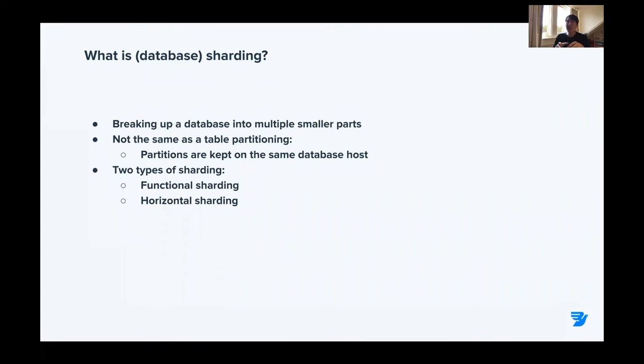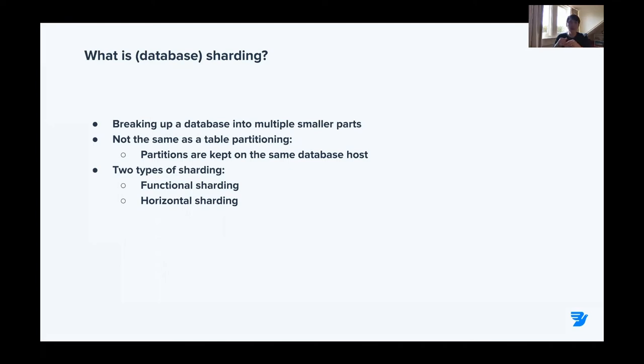Database sharding is basically breaking up your database into smaller parts. The reasons for doing that include: you've reached the limitations of your database — exhausted CPU, data size is too large, or replication is lagging behind. There could be reasons for performing sharding to spread the workload over multiple databases and multiple clusters. It's not the same as table partitioning — with table partitioning, you break a large table into smaller pieces, but they remain on the same host.